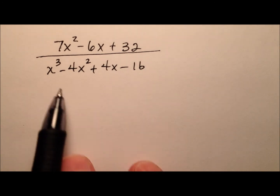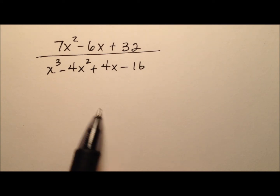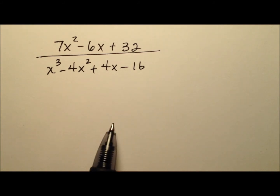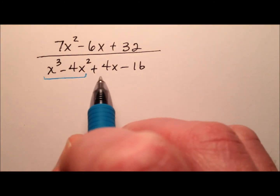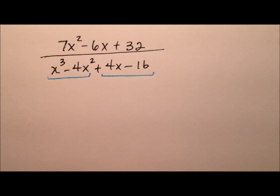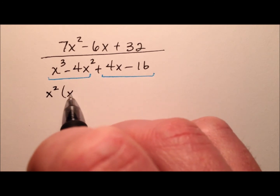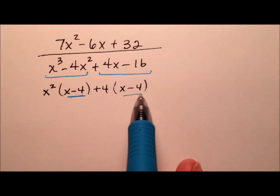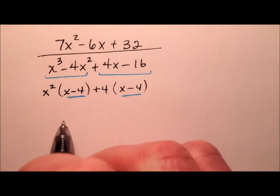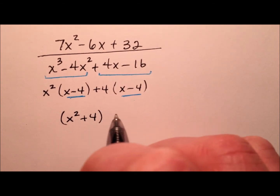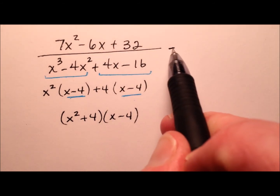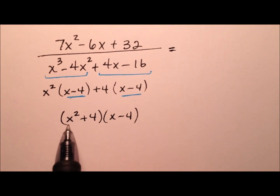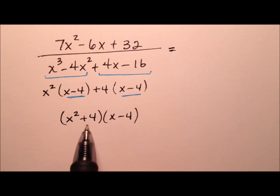Here I have this rational expression: 7x squared minus 6x plus 32 for the numerator, and then this denominator x cubed minus 4x squared plus 4x minus 16. The first thing to do is factor this denominator, and it looks like this will factor nicely by grouping. Taking x squared out of the first group gives x minus 4, and taking a plus 4 out gives another x minus 4. So this denominator factors as x squared plus 4 times x minus 4. Notice that x squared plus 4 is the sum of squares, which is an irreducible quadratic factor — it will not factor down further using real numbers.